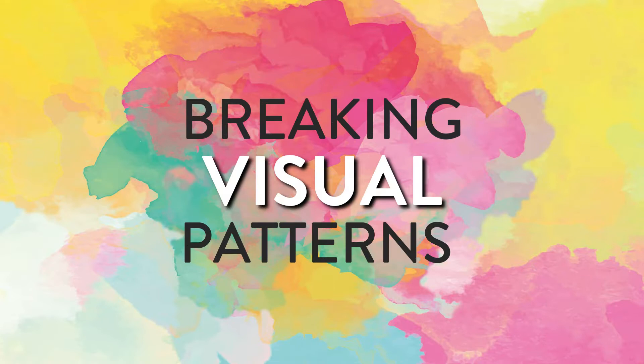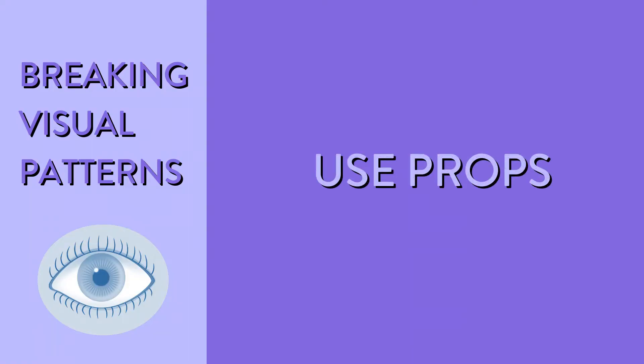Let's look at a few ways to keep things interesting for what your audience sees. An old-school technique that is still very effective is the use of props. If you are speaking about a book that changed your life, hold up that book and point to it. If I were speaking about the human brain, it would be so much more engaging if I held up a model of the human brain.